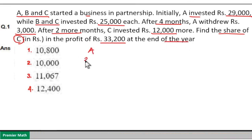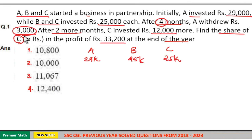Here A invested 29,000 and B and C invested 25,000 each. Now after 4 months A withdrew Rs. 3,000.